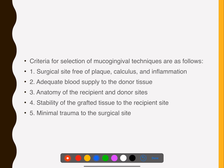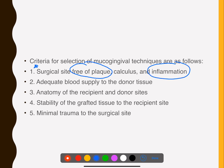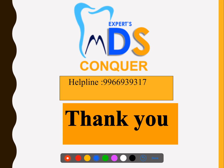There are criteria for the selection of mucogingival procedures — not every case is suitable. First and foremost, the site must be free of plaque, calculus, and inflammation, because it is an aesthetic procedure and infection should not be present. There must be adequate blood supply for the donor tissue, stability of the graft for integration, and minimal trauma. Make a note of all of these criteria.